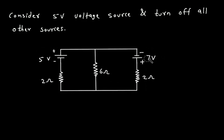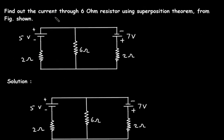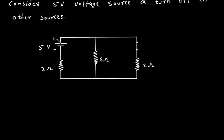If we turn off the 7 volt voltage source, then it will be a short circuit. We have to find the current through the 6 ohm resistor. Here the terminal is positive and the other terminal is negative. The current flows from the positive terminal of the battery to the negative terminal, so the direction of this current will be as shown, and let's call this current I prime.